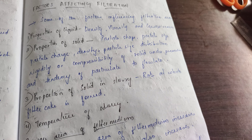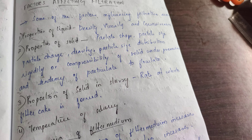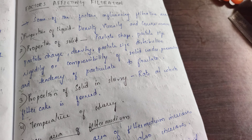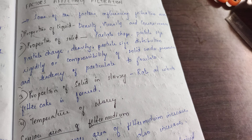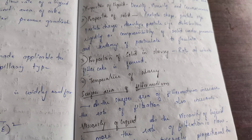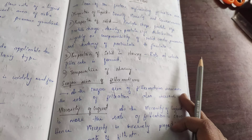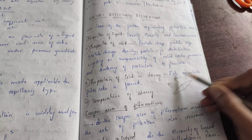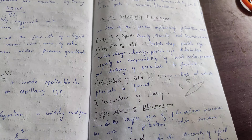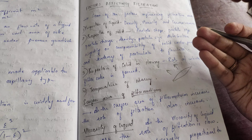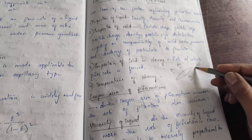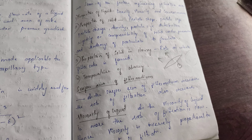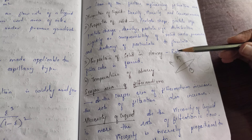Apart from those, the most important factor is the surface area of the filter medium. More surface area means more rapid filtration. For example, using a large strainer instead of a small one speeds up filtration. Regarding viscosity of the liquid: as viscosity increases, it becomes difficult for the liquid to pass through the mesh of the filter medium, so the rate of filtration decreases, and vice versa.